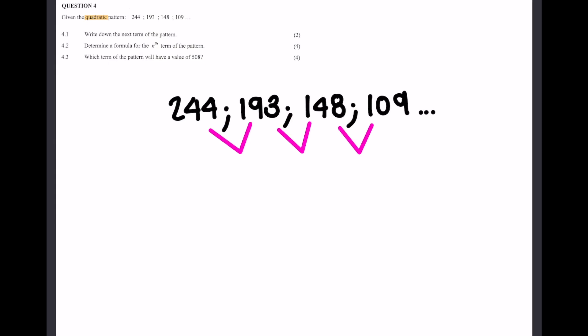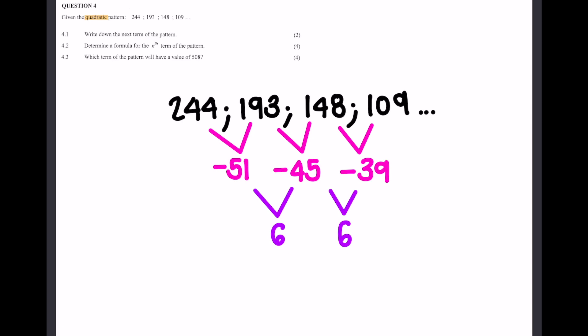Remember to determine your difference, it's term 2 minus term 1. So 193 minus 244 is negative 51. 148 minus 193 is negative 45 and 109 minus 148 is negative 39. Now to get our second difference, we're going to do the same thing again. So minus 45 minus minus 51, which is the same as minus 45 plus 51, gives me 6, and minus 39 minus minus 45 is also 6.